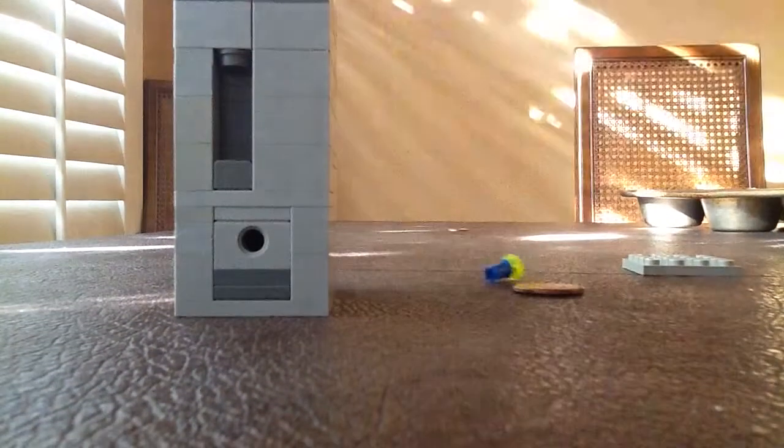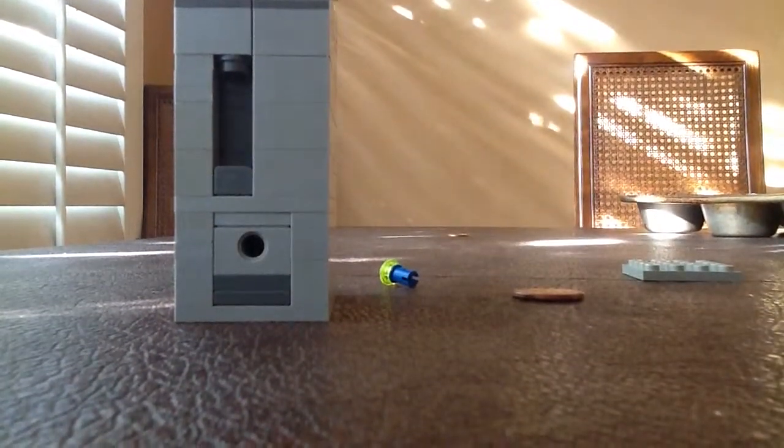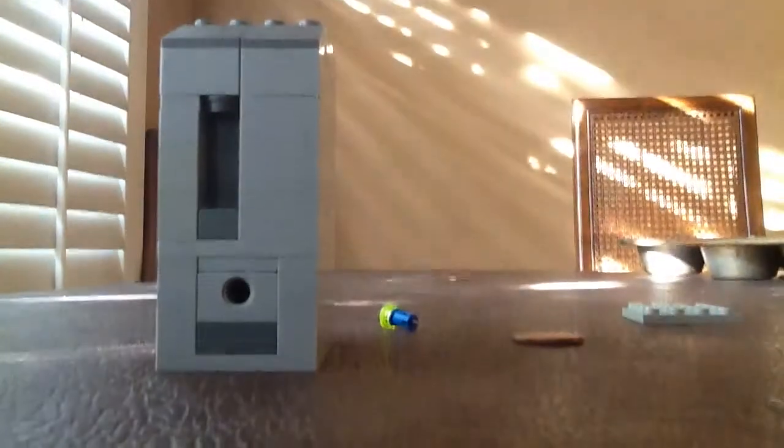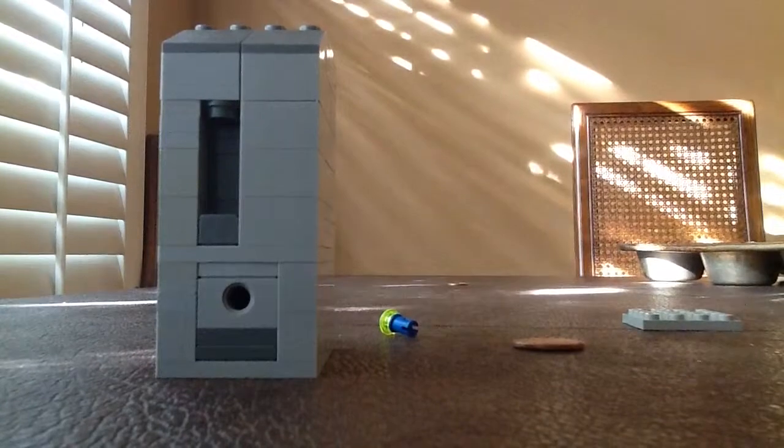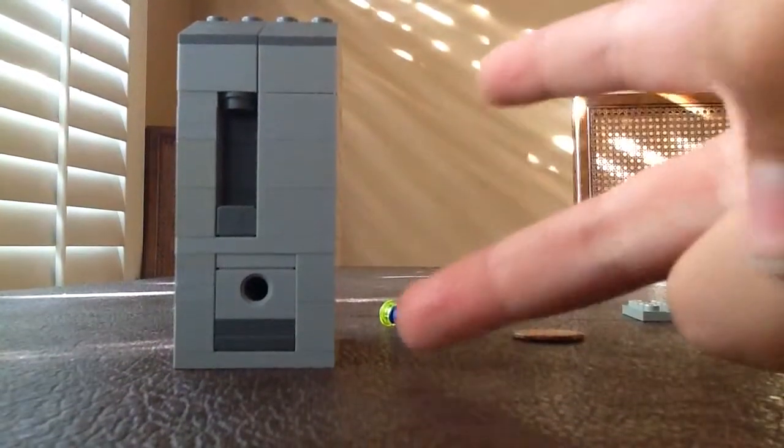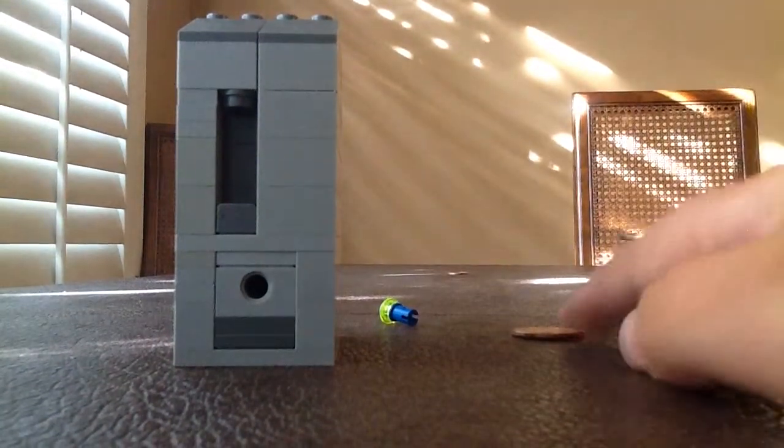So as you can see there's a little hole there, and what you'll do is take your candy. I'm using M&Ms. You can use anything that will fit in the device. If you use Gobstoppers, it'll only dispense one. M&Ms dispense two. I don't know about other candies, but that's all I've tried so far.